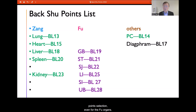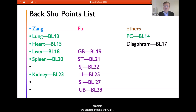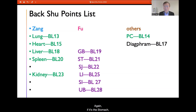These five Zang back Shu points should always be the center of point selection. Even when treating a Fu organ — like the gallbladder — we should choose the gallbladder point together with its paired organ, the liver. Similarly, for the stomach, we choose the stomach point together with the spleen point.